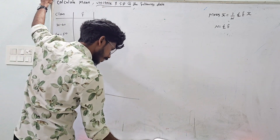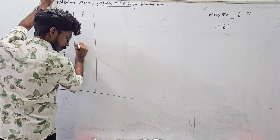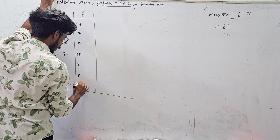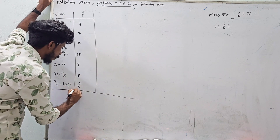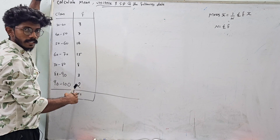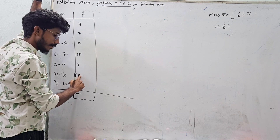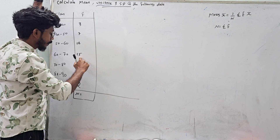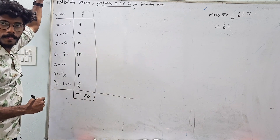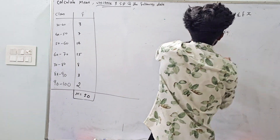Then frequency. The frequencies for the same question are: 3, 7, 12, 15, 8, 3, 2. This frequency sum is calculated. The cumulative frequency values are: 10, 28, 37, 45, 50. The total frequency sum is 50.